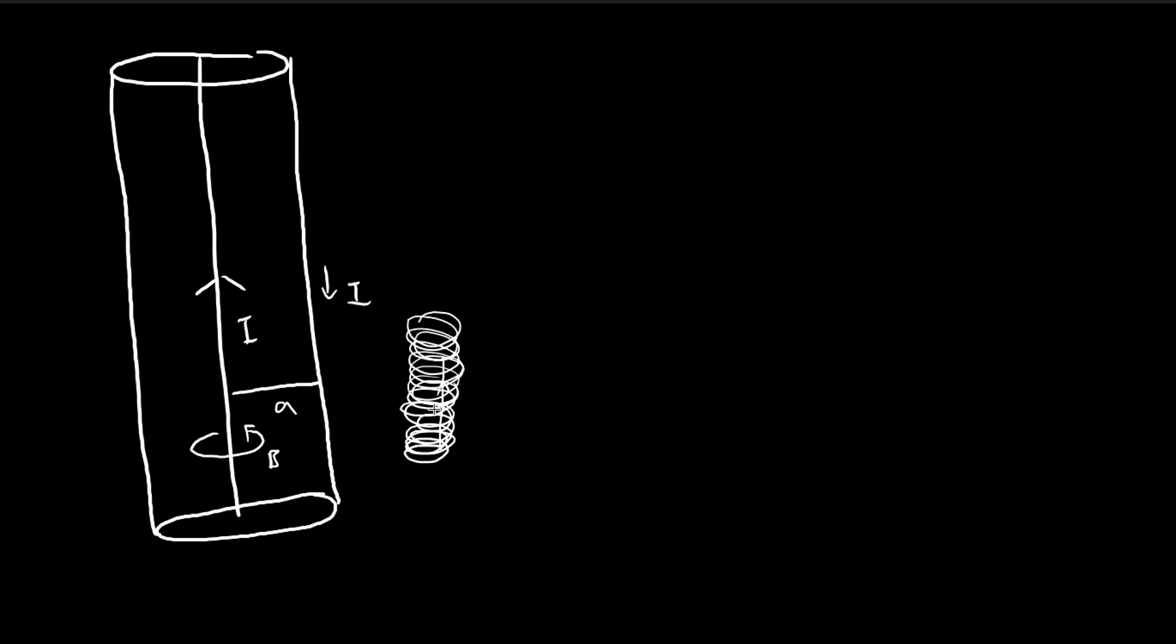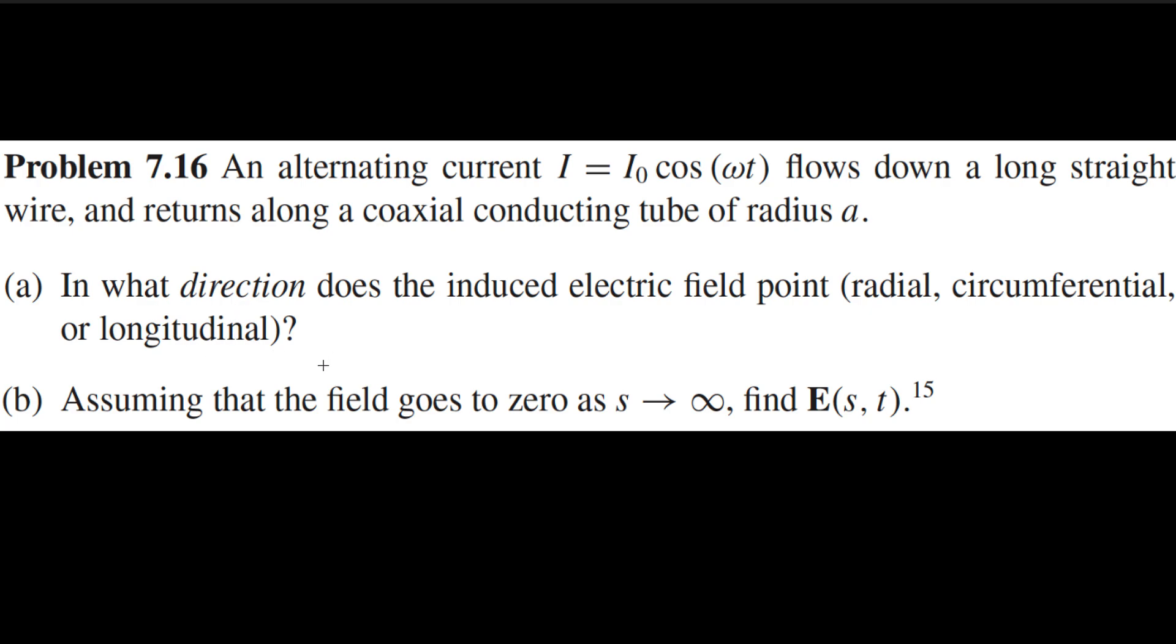In Ampere's law, we have current that's causing everything, and here we have the magnetic field that's causing the electric field. So by the same argument, we can actually carry the argument we used for the solenoid to this situation. And since the magnetic field is going around the same way the current around the solenoid is, we can also guess that the electric field is also longitudinal. So for part A, the answer is longitudinal.